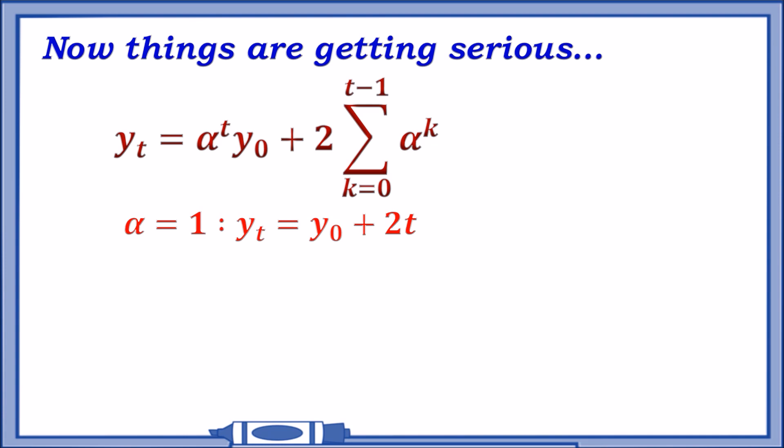When alpha is 1, then the first term becomes just y_0, and then we have plus 2 now. Replacing the alpha as 1, we're going to have a sum of 1 to the power of k from k equals 0 to t minus 1. Actually, how many terms does that give up? Well, we have t minus 1 plus an extra 0 term, which is a 1 term. So in fact, we have t terms. So actually, the sum of t ones is just t. So the conclusion is y_t equals y_0 plus 2t.